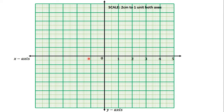The numbering on the positive and negative sides is done in a similar manner. The only difference is that on the negative side, the numbers are negative. So on the positive side we have 1, 2, 3, 4, 5, and on the negative side we have negative 1, negative 2, negative 3, negative 4, and negative 5. We have now numbered our x-axis. Let's go to the y-axis. We are using a scale of 2 cm to 1 unit on both axes.